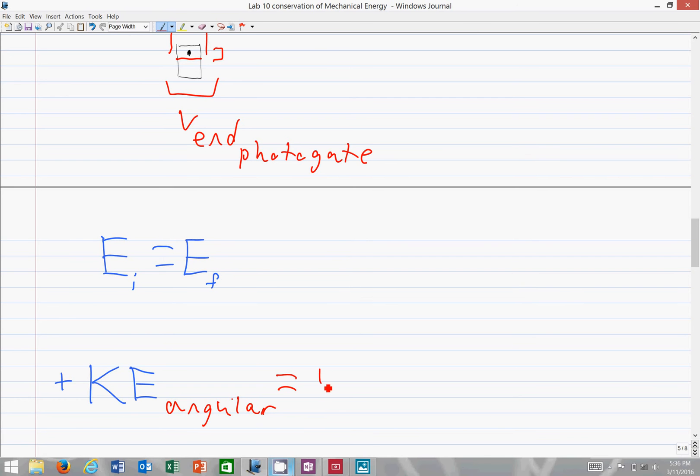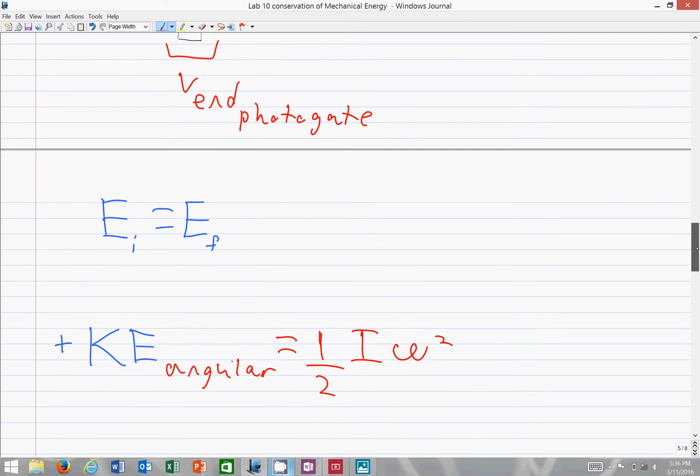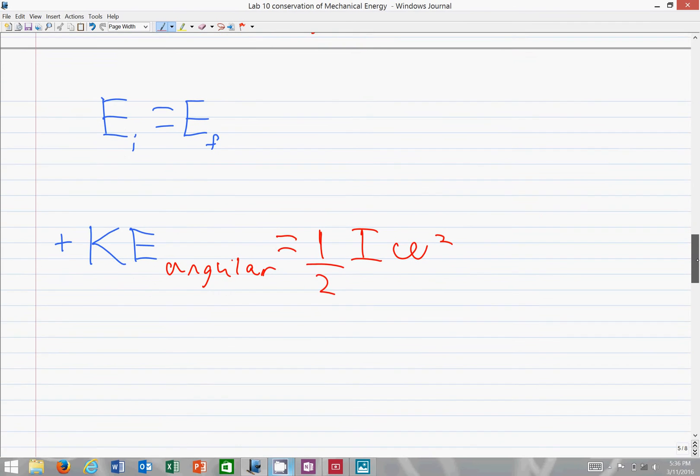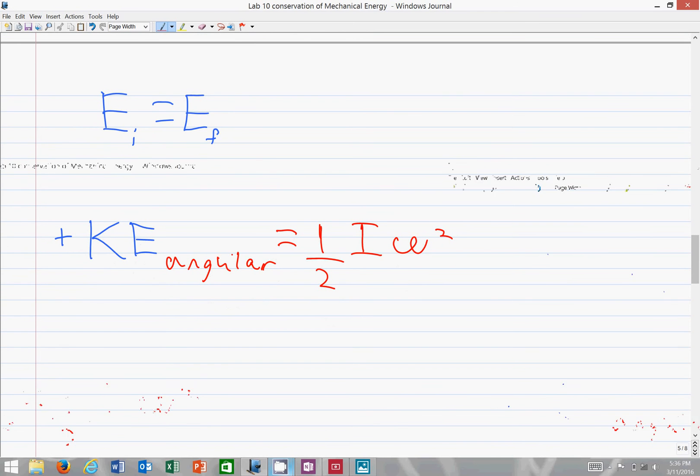The angular kinetic energy is one half I, which stands for moment of inertia, omega squared. And omega is the angular velocity. So not too different to what we have seen with one half mv squared, the translational kinetic energy.